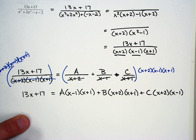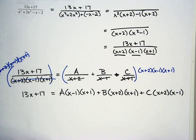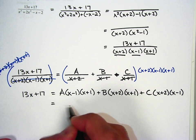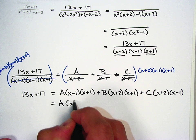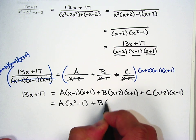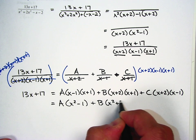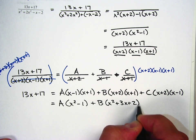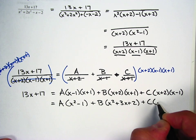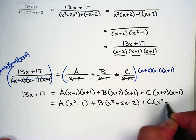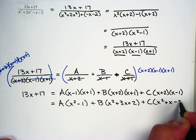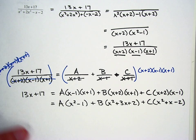Now that right side can be a doozy of an equation to simplify. So I recommend foiling first and then distributing in the letter. So we're going to say A times x squared minus 1, plus B times x squared plus 3x plus 2, plus C times x squared plus x minus 2.